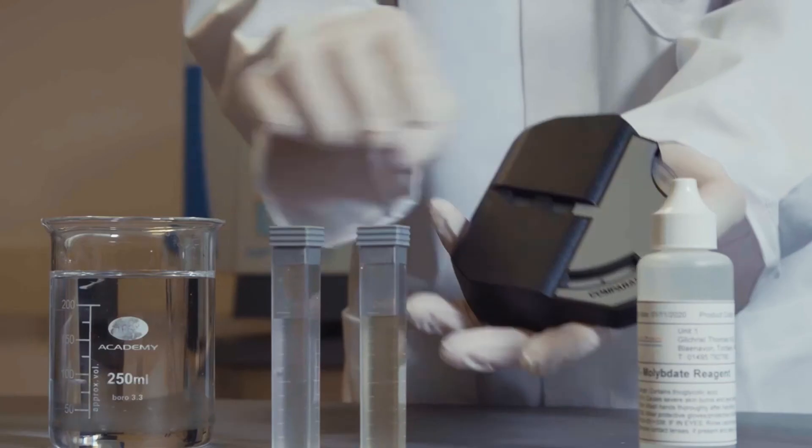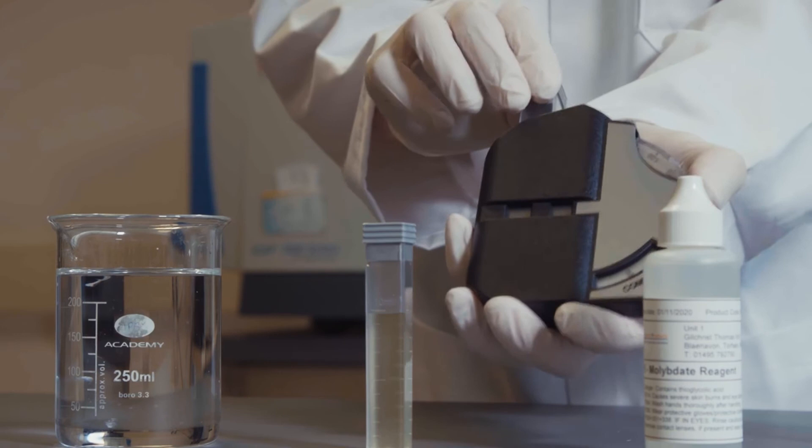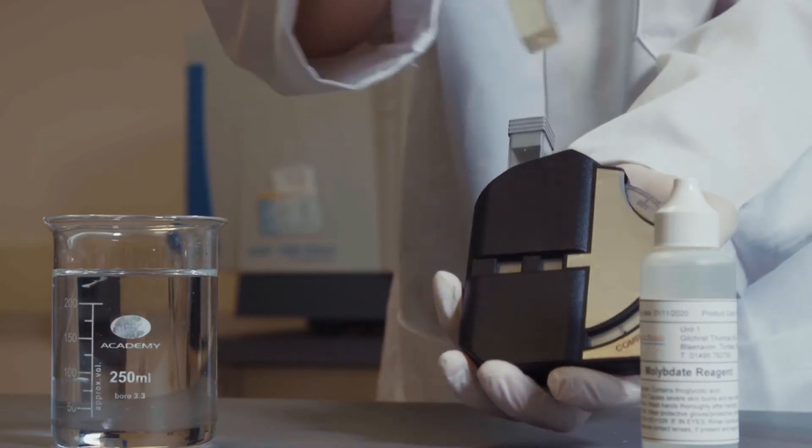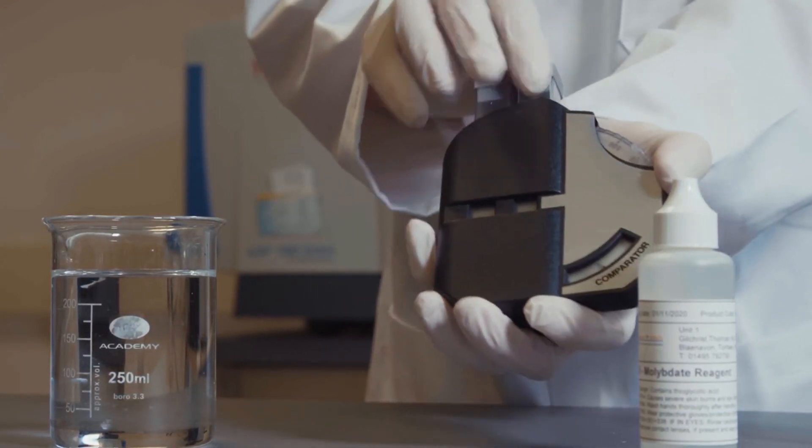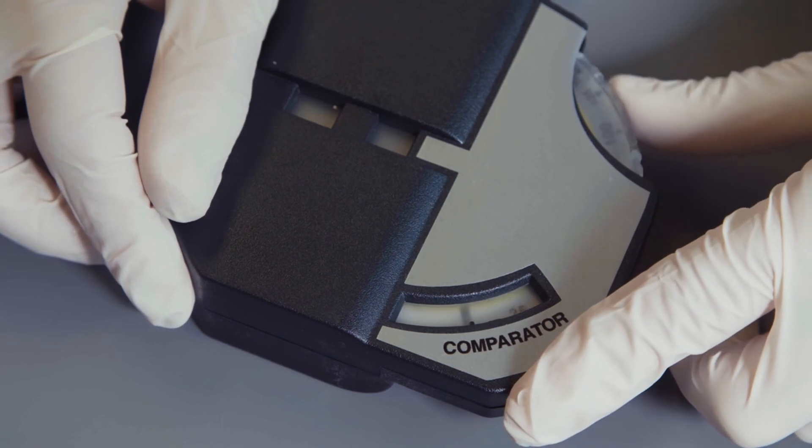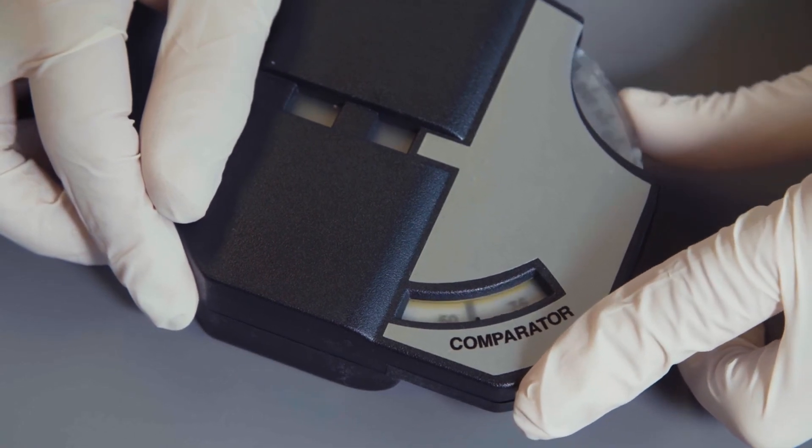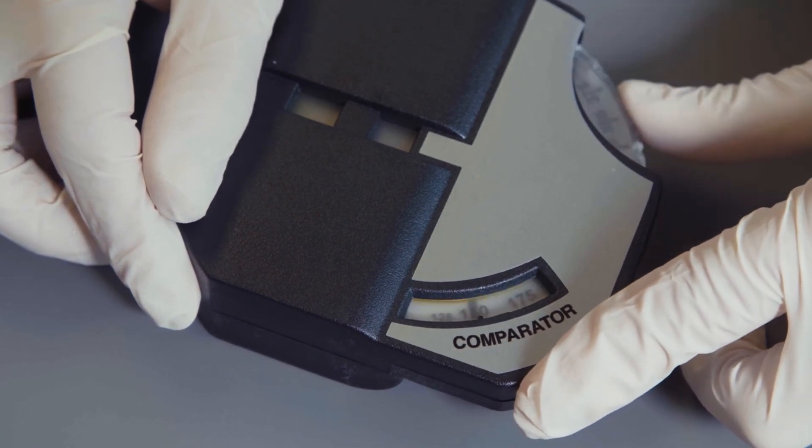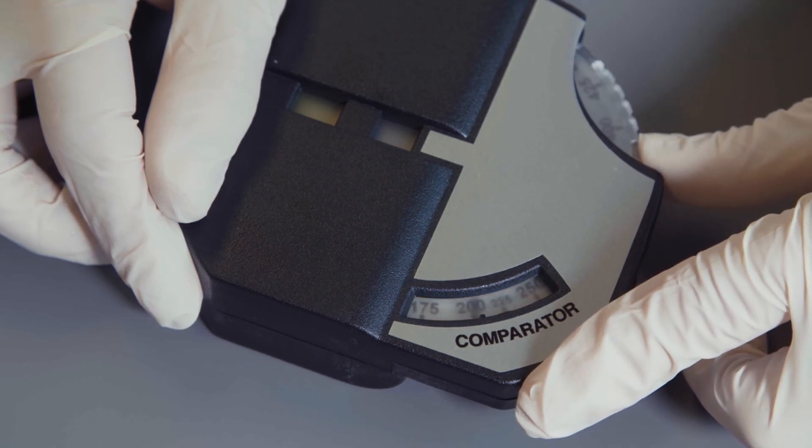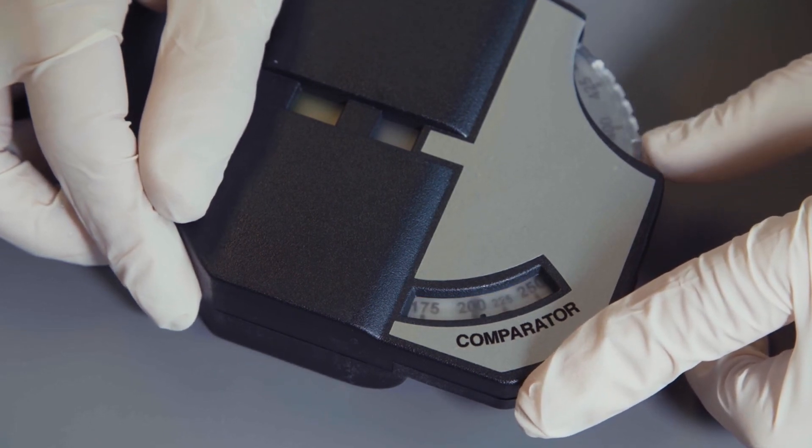Take the comparator and place the first tube, containing no reagent, into the outer compartment. Place the second tube into the other compartment. Hold the comparator up to a light source and look into the two windows. Rotate the disc to best match the colors and read the Molybdate PPM from the bottom right of the comparator.